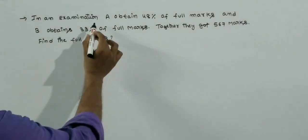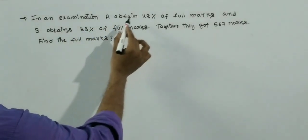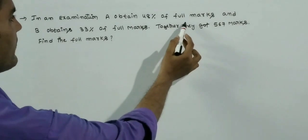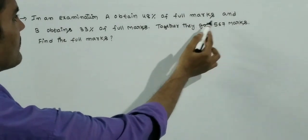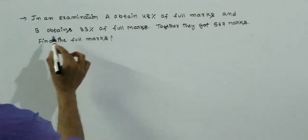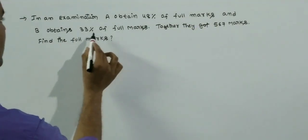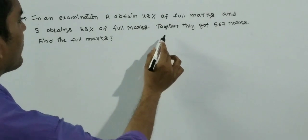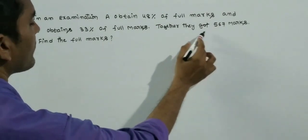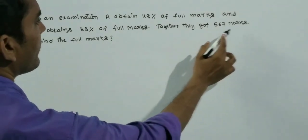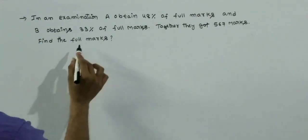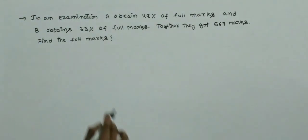In an examination, A obtains 48% of full marks and B obtains 33% of full marks. Together they got 567 marks. Find the full marks.